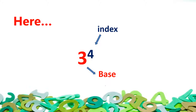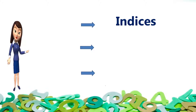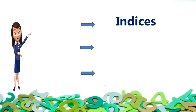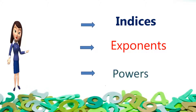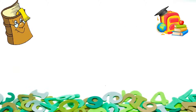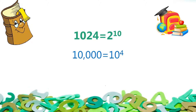Indices are a mathematical concept for expressing very large numbers. They are also known as exponents or powers. For example, 1024 is equal to the product of 2 ten times, which is equal to 2 raised to power 10. Similarly, 10,000 is equal to the product of 10 four times, and hence it is equal to 10 raised to power 4.